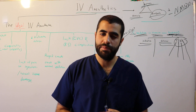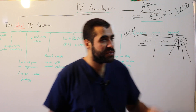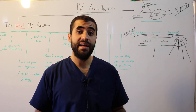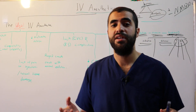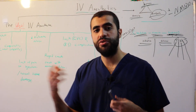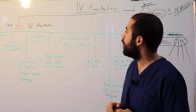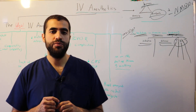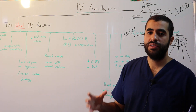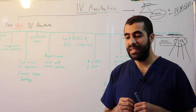So we use IV anesthetics to sedate the patient, to produce anxiolysis, to hypnotize the patient during induction and during surgery, and sometimes during emergence from anesthesia. This is the general concept to introduce IV anesthesia. Now when we talk about IV anesthetics, we talk about what we call the ideal IV anesthetic — the features we wish it to have.